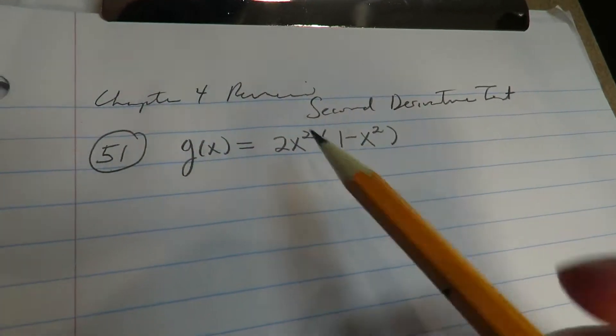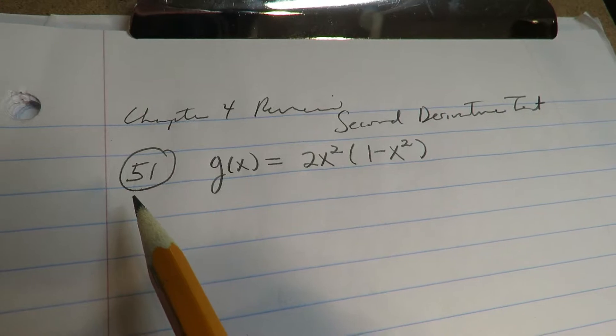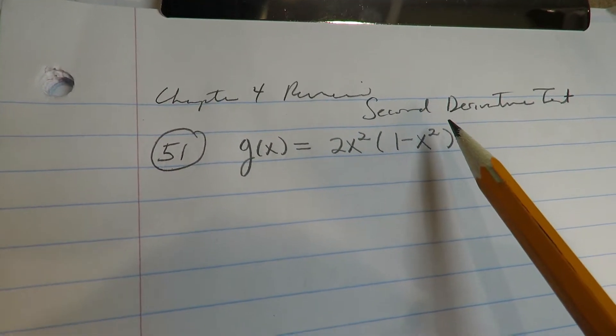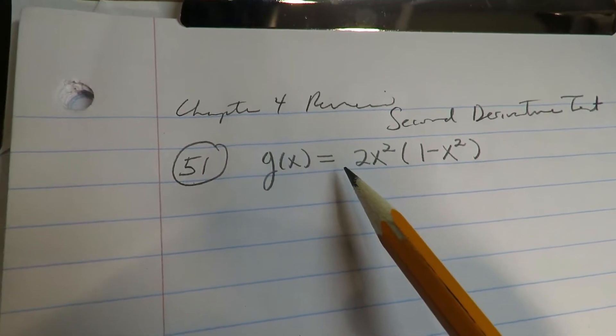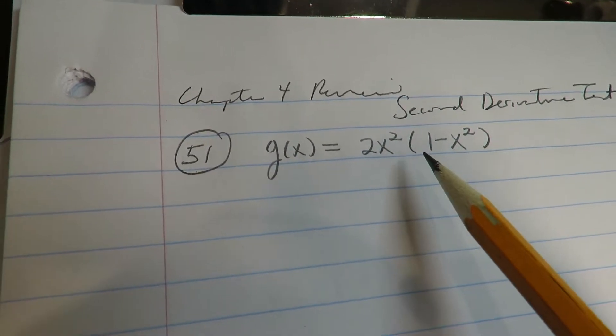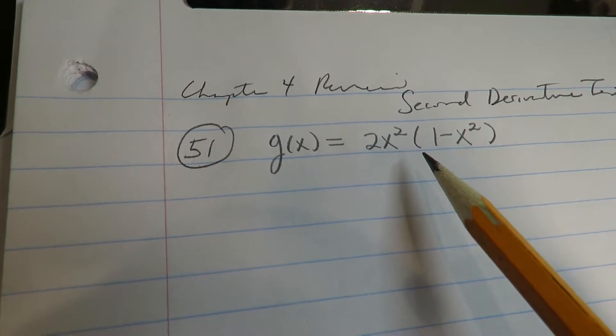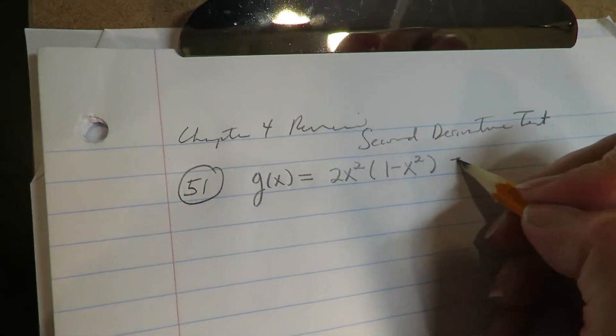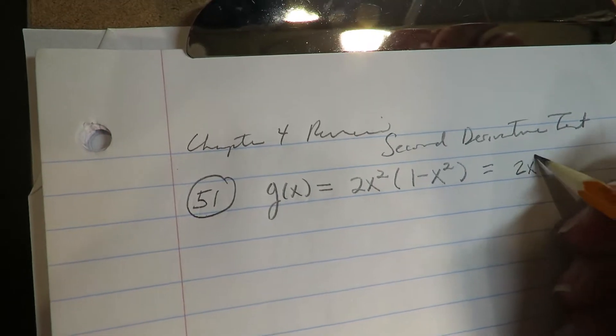Okay, we're doing Chapter 4 Review, number 51. This is the second derivative test, so I need the second derivative. The way this is formatted, taking the product rule is sort of a waste of your time. I would just go ahead